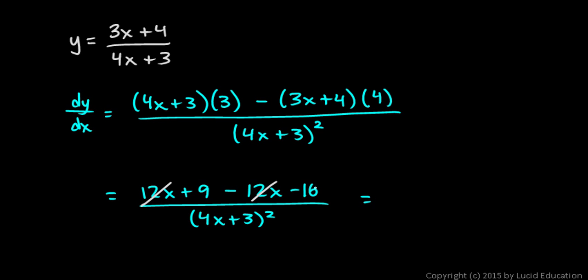We're left with 9 minus 16, which is negative 7 over 4x plus 3 squared. And that's it, that's your answer. Just a straightforward application of the quotient rule for derivatives.